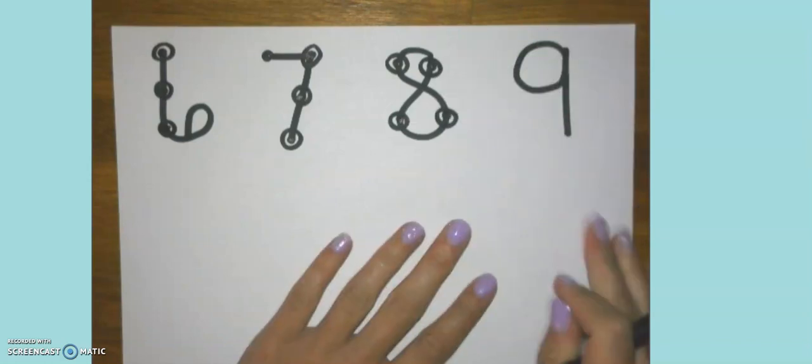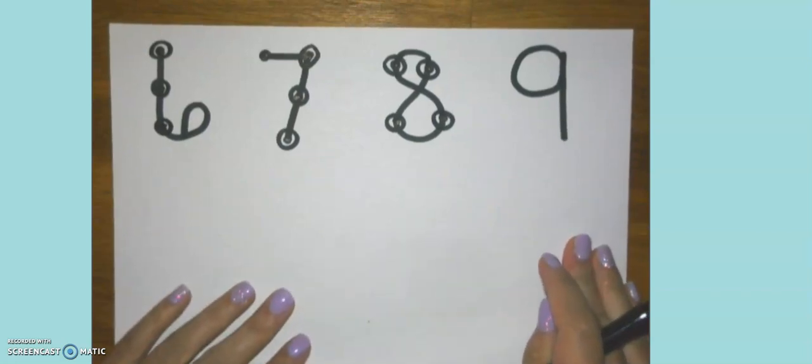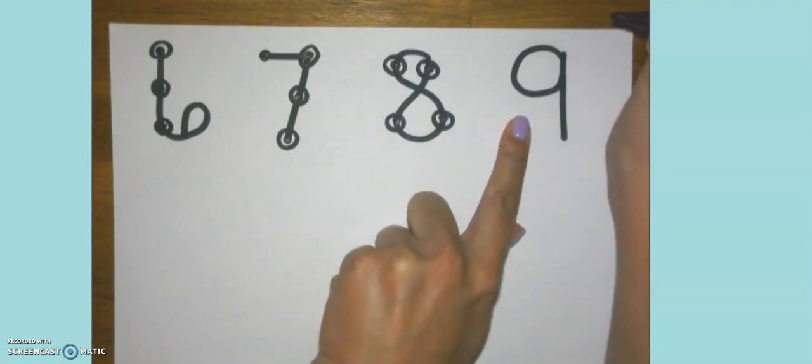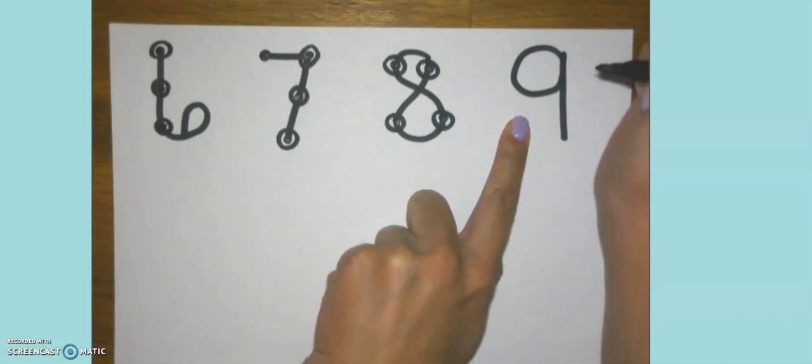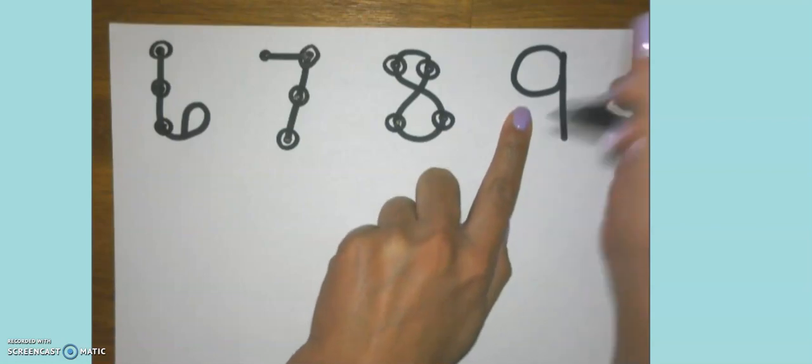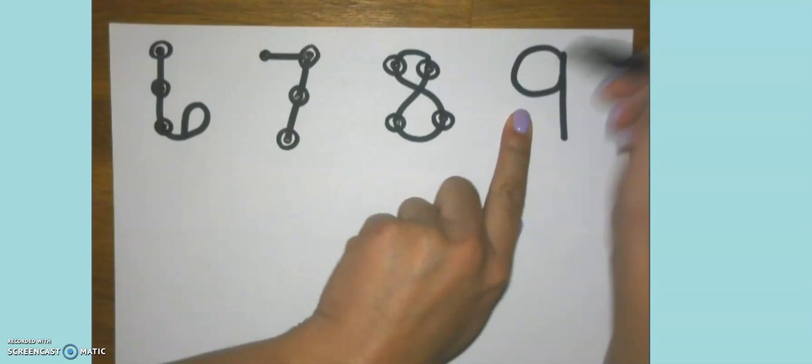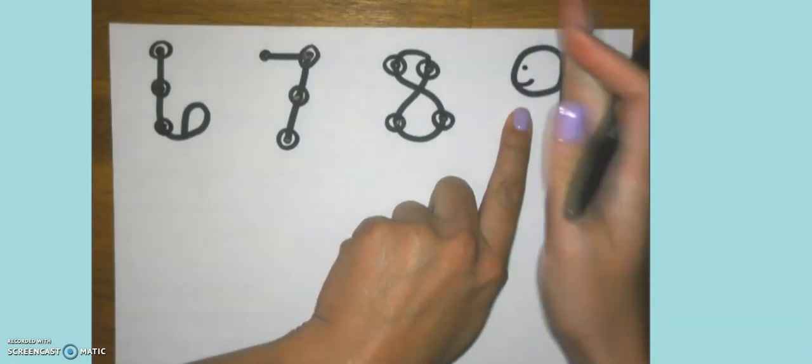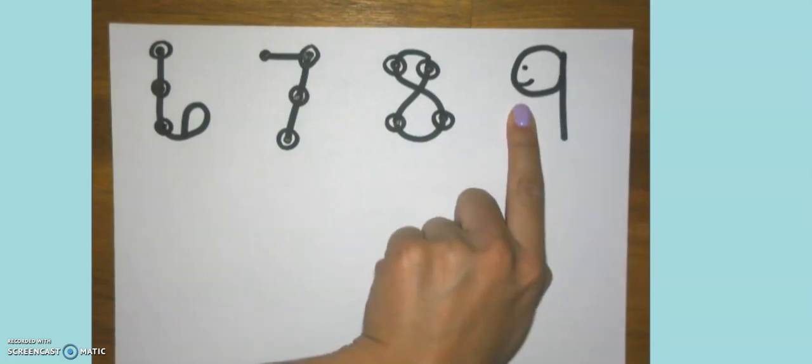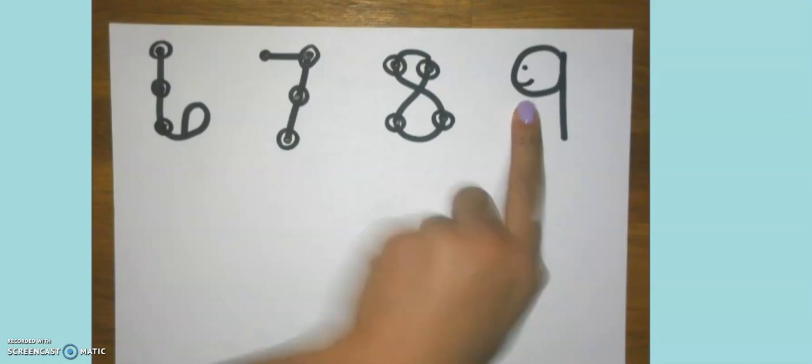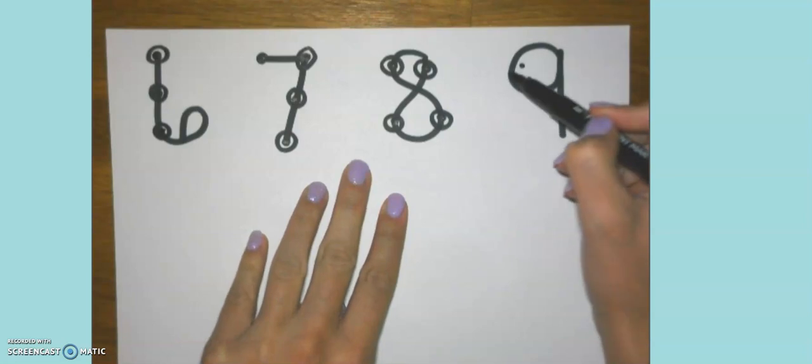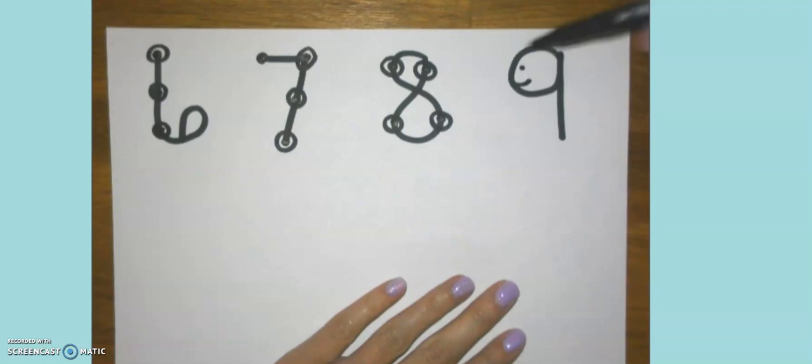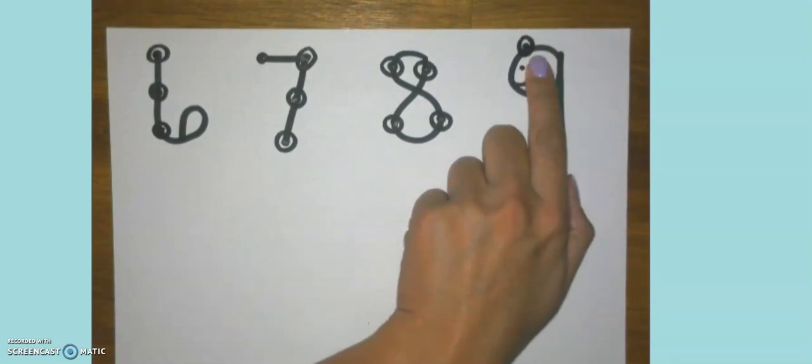The last number for touch points and for today is the number nine. Nine, I would say is the trickiest of the numbers because there's a lot of touch points and they're in some different spots. Here's how I teach my class how to remember these touch points. I have them think of the number nine as a person. So here's the person's head and his body. We can only see the side of his body, but this is our person.